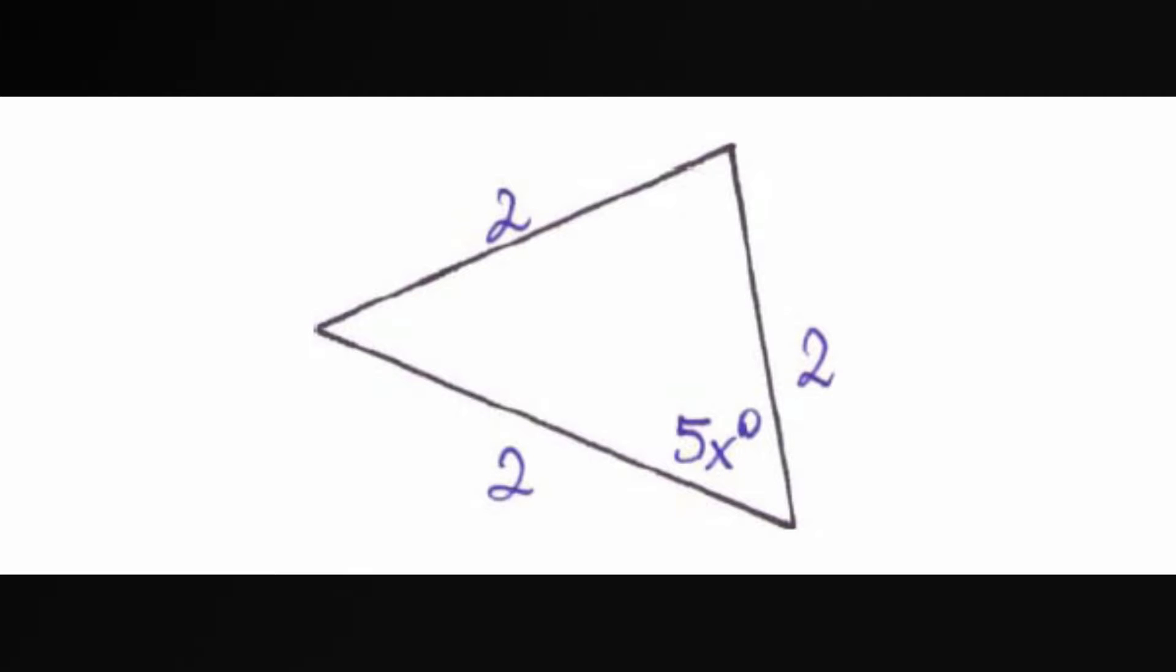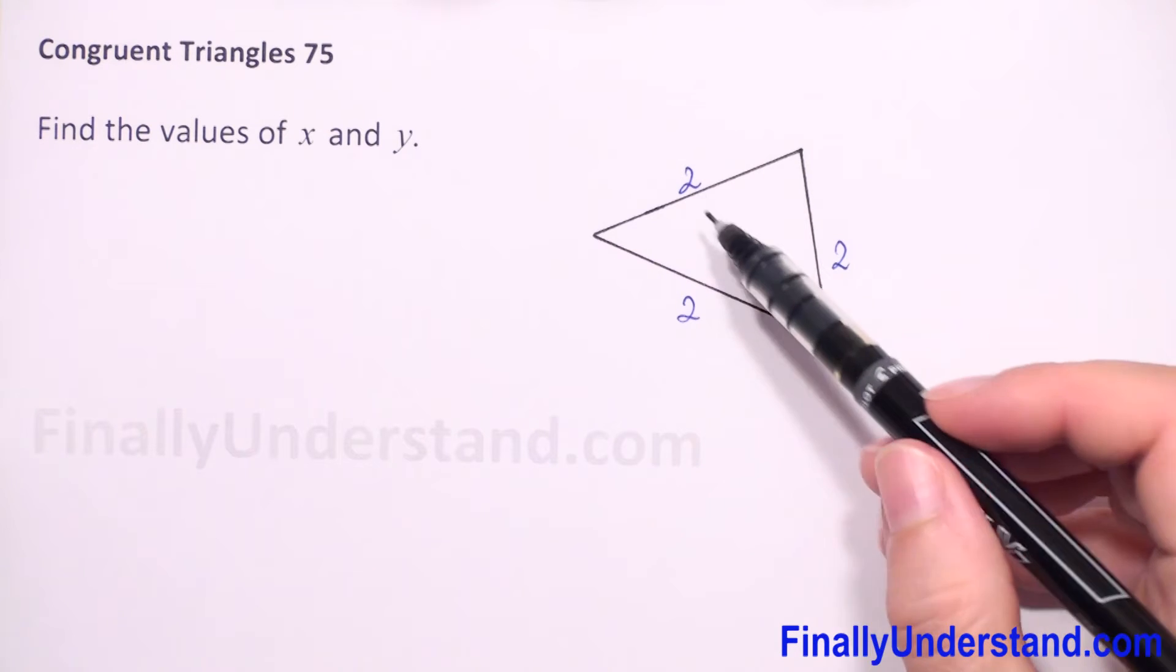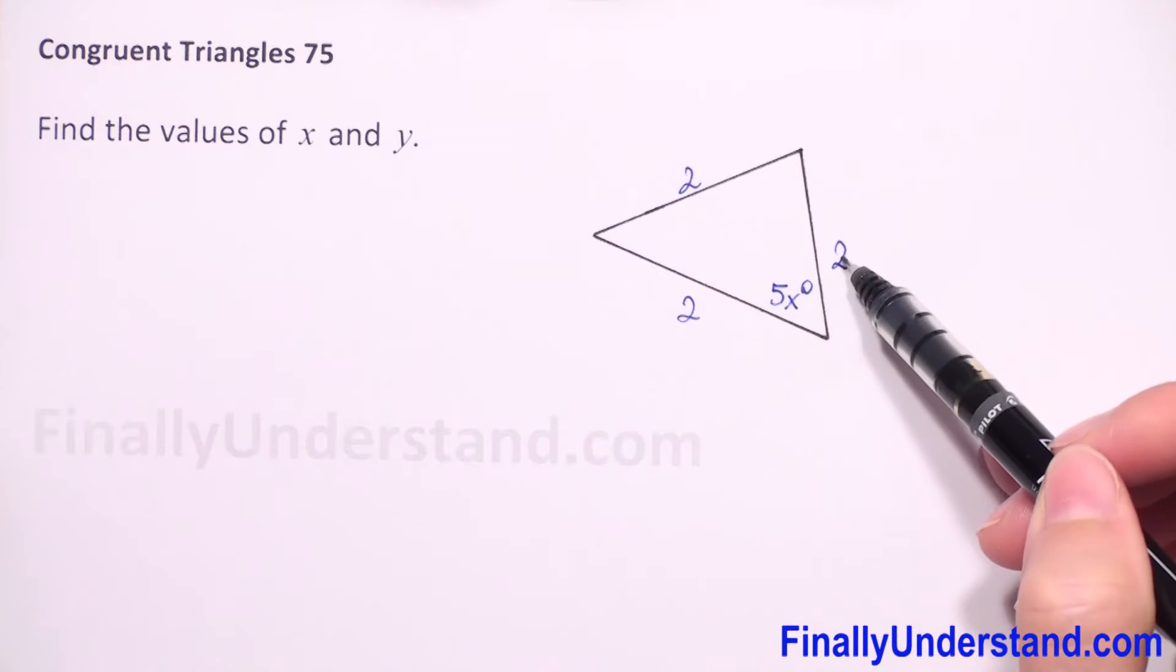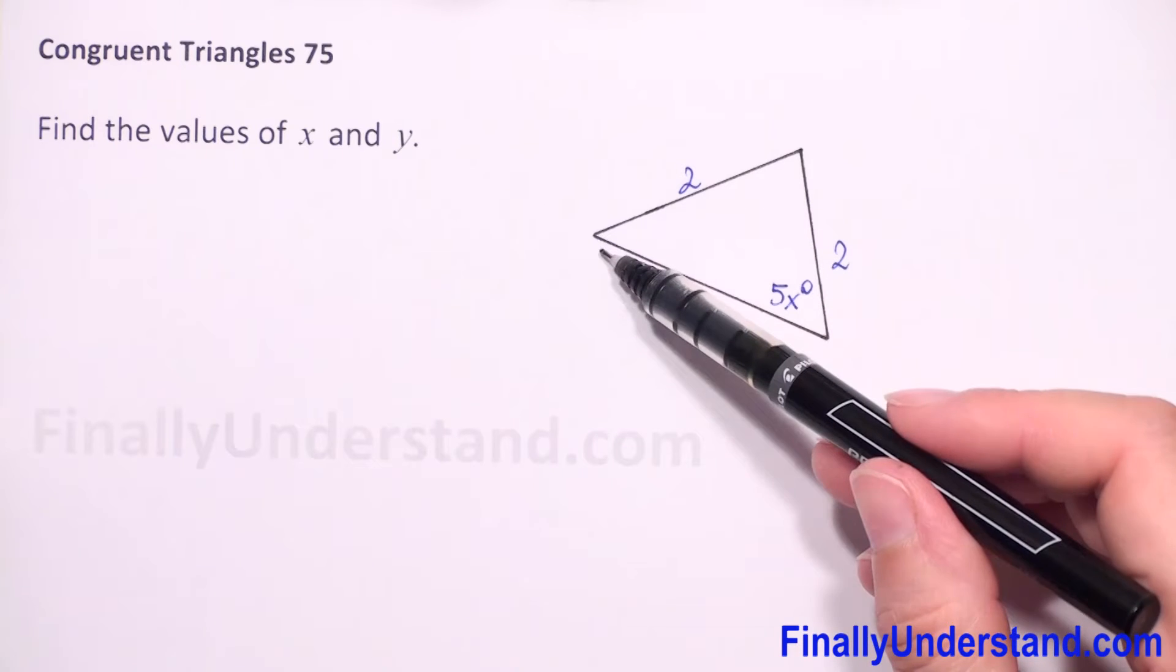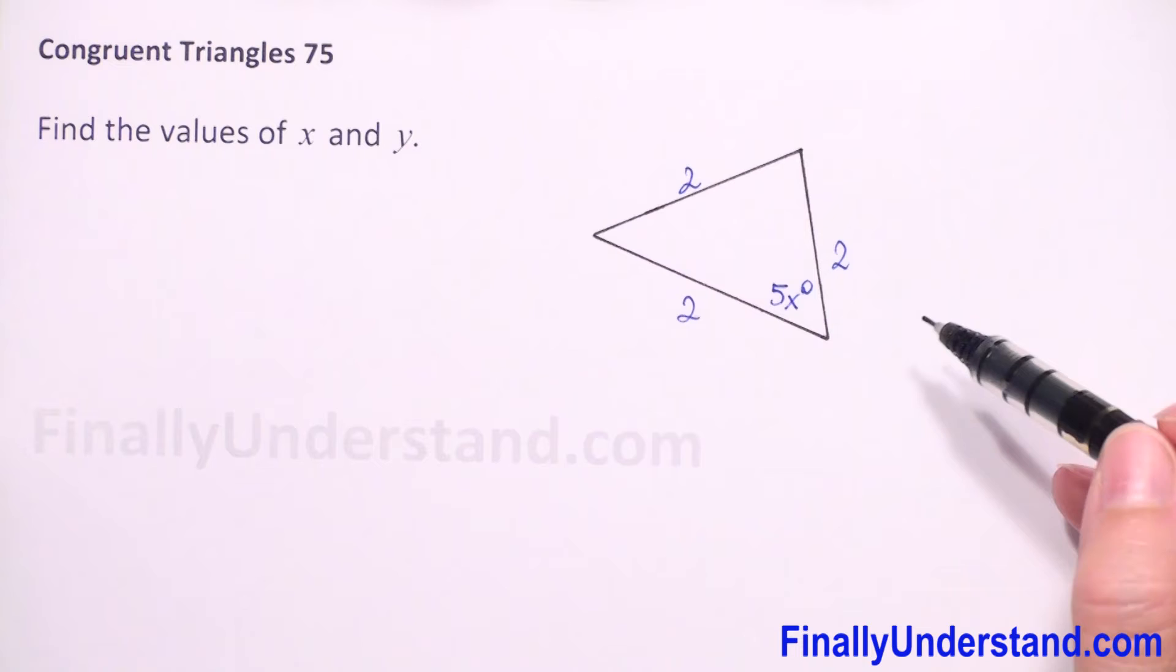We have to find the value of x in this example. We have a given triangle and we see that the sides of this triangle have length 2 units. It means that we have here an equilateral triangle.